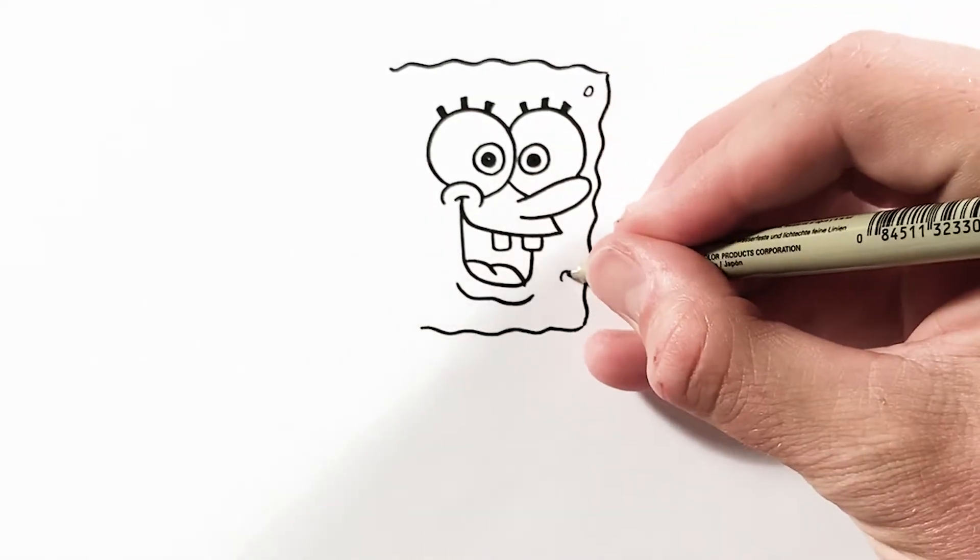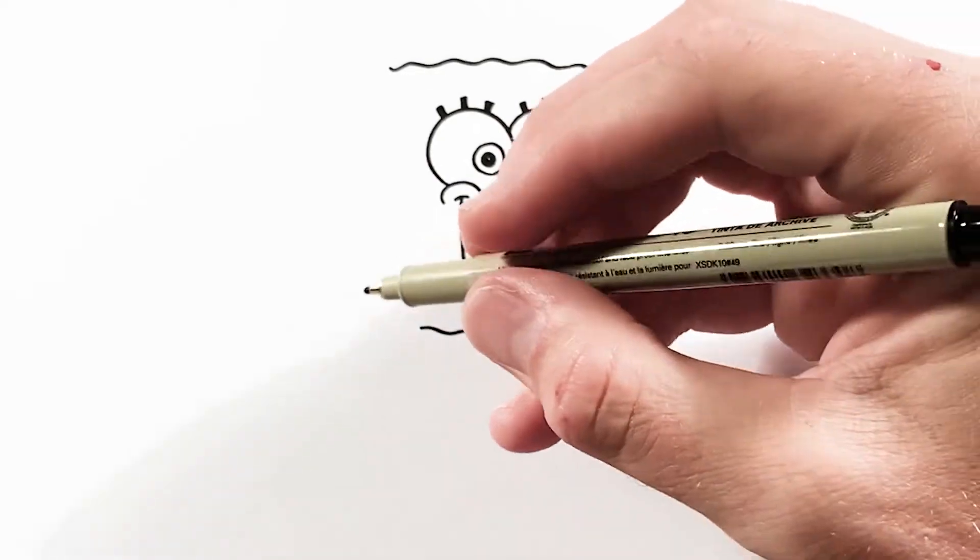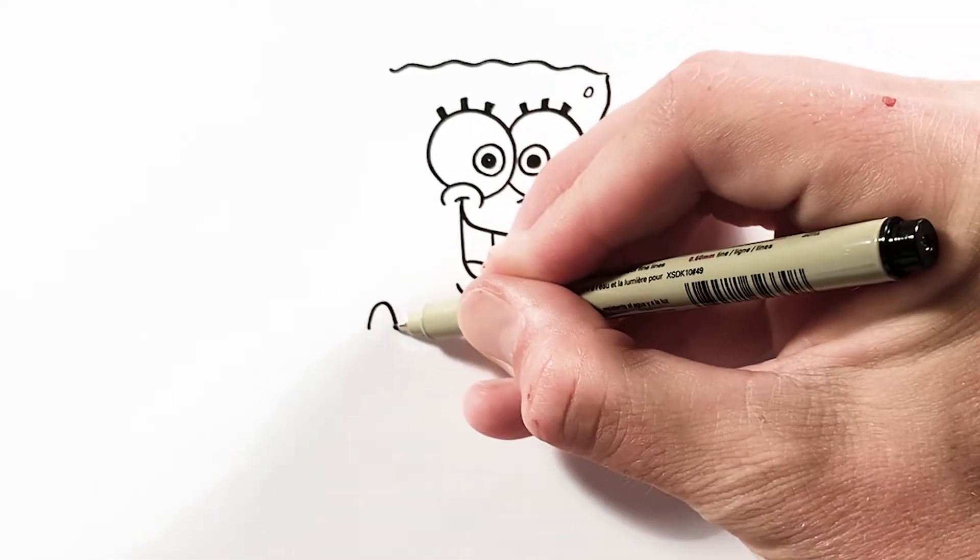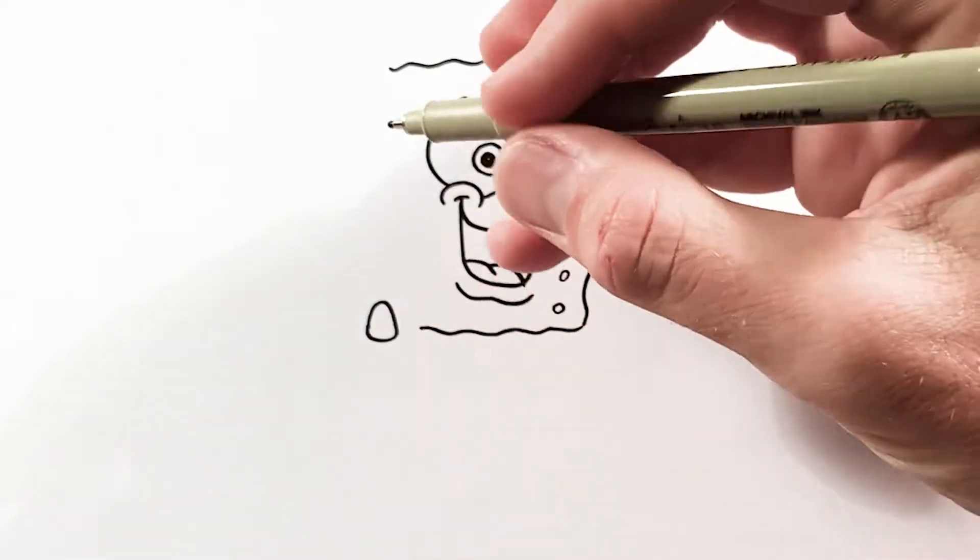I also know that SpongeBob's shoulder is going to be in front of his body visually, so I want to draw that early.